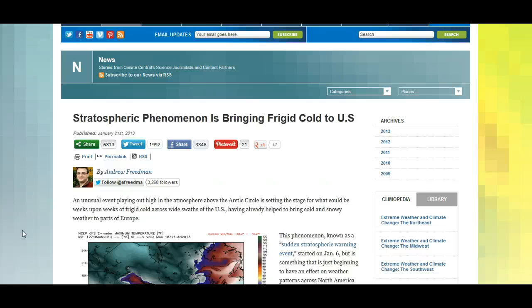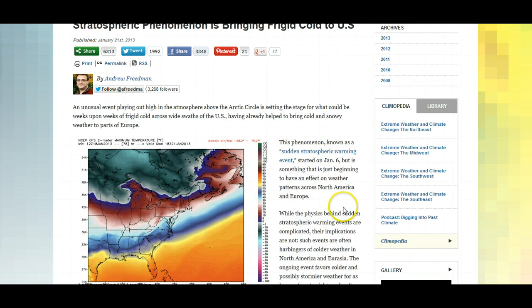An unusual event playing out high in the atmosphere above the Arctic Circle is setting the stage for what could be weeks upon weeks of frigid cold across wide swaths of the US, having already helped to bring cold and snowy weather to parts of Europe. This phenomenon, known as Sudden Stratospheric Warming Events, started on the 6th of January, but is something that is just beginning to have an effect on weather patterns across North America and Europe.